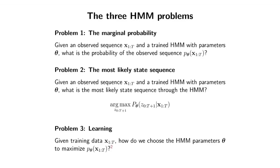The second problem is: if I give you an observed sequence like words and I give you the hidden Markov model, so you have all the probabilities—you've got the a and the phi.